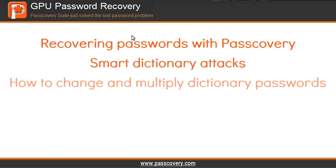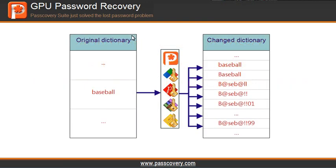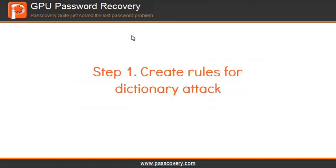The goal is to take a password from the dictionary, replace some with symbols, add numbers to the end, and check the result. This is going to be a two-step process. First, we need to establish the rules for the attack.